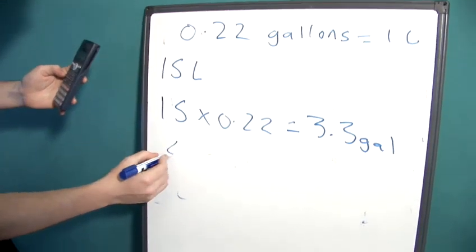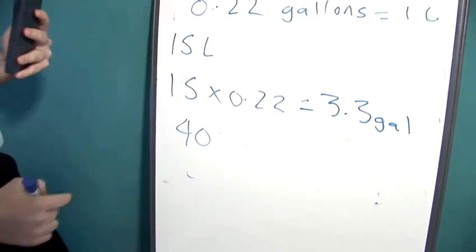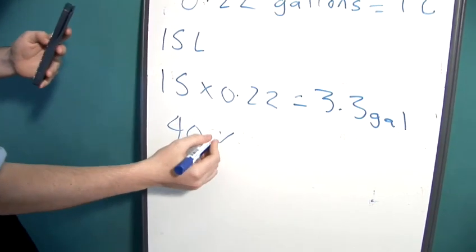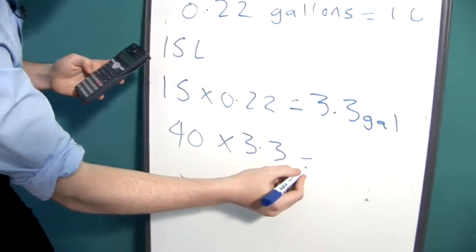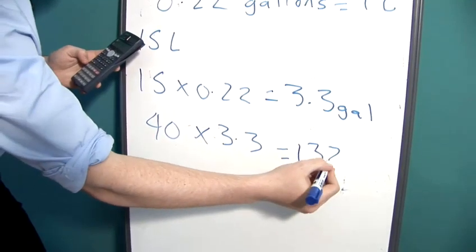Now, knowing that the miles per gallon of the Ford Focus was 40 miles per gallon, we multiply this by 3.3 and we get 132 miles.